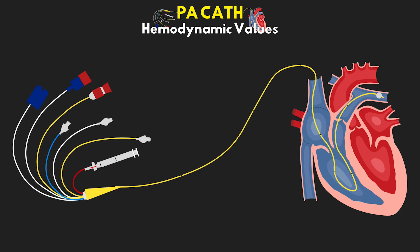Having just discussed the different waveforms that we can get by transducing along the path of the PA catheter, we do need to quickly review over the normal hemodynamic values that we would expect to see. When we talk about the normal hemodynamic values, we can think of them in two categories: those which we directly measure and those which are calculated or derived from other values we directly measure. Know that these values truly vary depending on the source of information you're using; from facility to facility, provider to provider, they may have slightly different normal values.